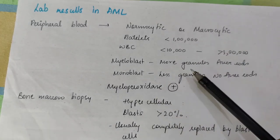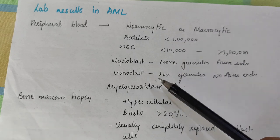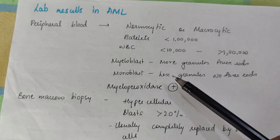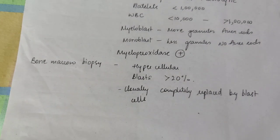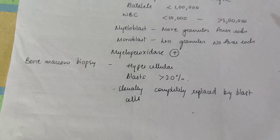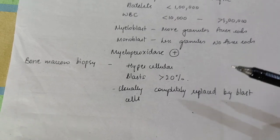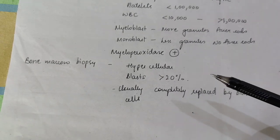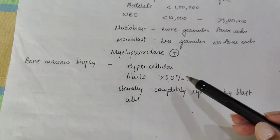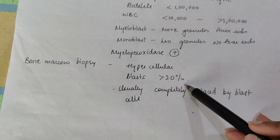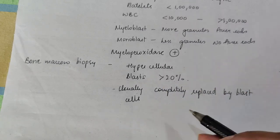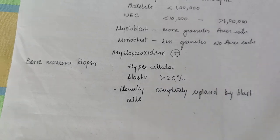There is no myeloperoxidase in monoblastic or megakaryoblastic AML. On bone marrow biopsy, the marrow is hypercellular with crowding, more than 20% blast cells, and normal cells are replaced by blast cells.